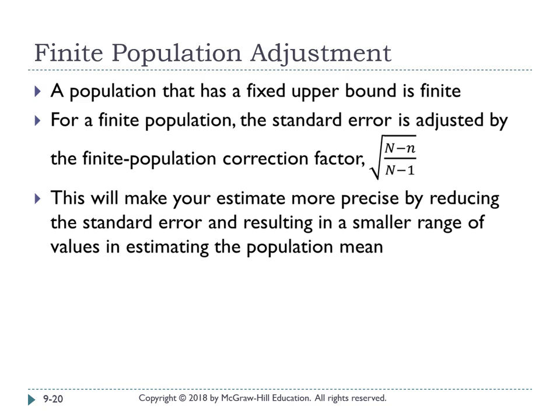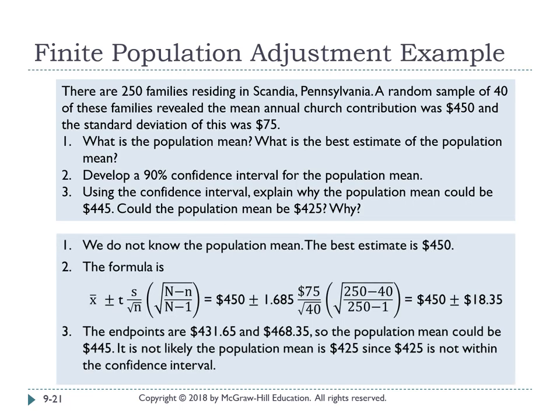A population with a fixed upper bound is called a finite population. When dealing with a finite population, the standard error must be adjusted by the finite population correction factor: multiply by the square root of (N minus n) over (N minus 1), where N is the population size and n is the sample size. This adjustment makes your estimate more precise by reducing standard error and producing a smaller range of values.